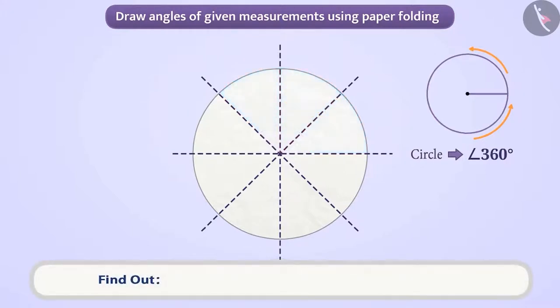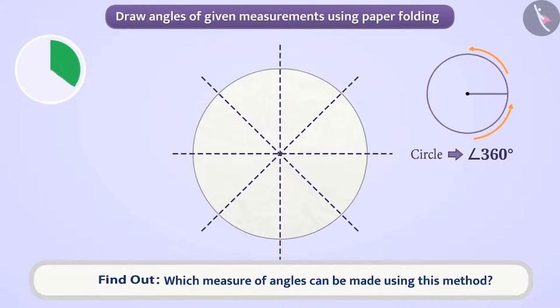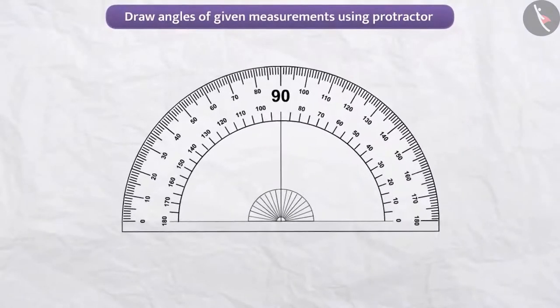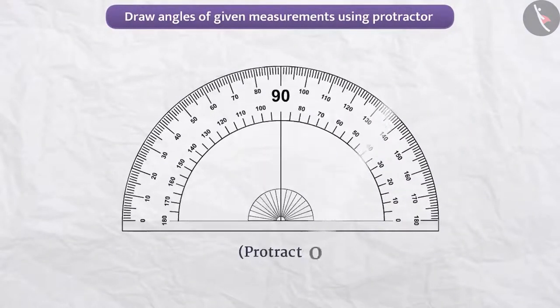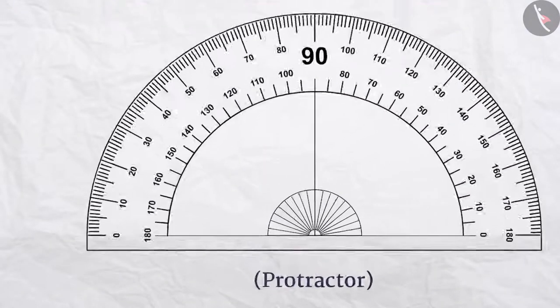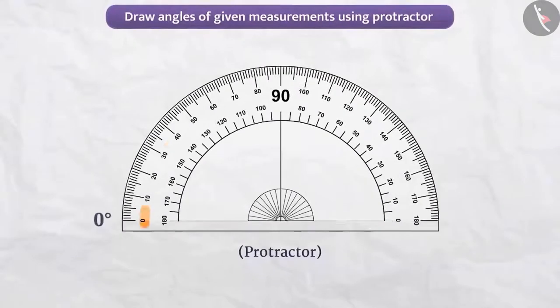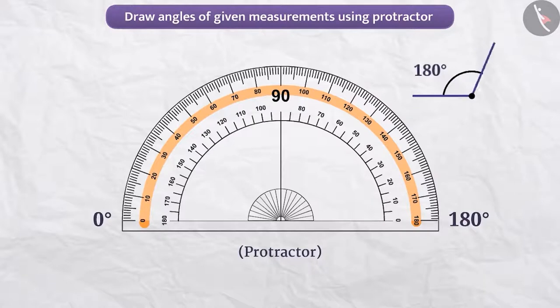Similarly, which measure of angles can be made using this method? We also use the protractor to draw angles. Since there are sections from 0 to 180 degrees on the protractor, we can easily draw angles up to 180 degrees.